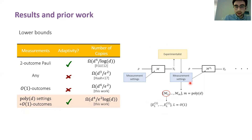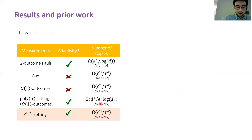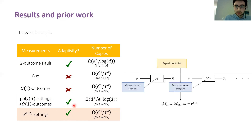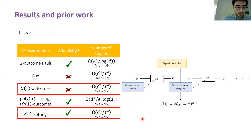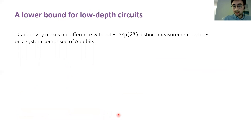Finally, this brings us to our main result: a tight lower bound on single copy quantum tomography that's robust to adaptivity, so long as you're limited to a number of measurement settings that doesn't grow exponentially in the dimension. Now why is this bound interesting? These are the two lower bounds I'll be focusing on mainly in this talk. Let me explain why that last bound is interesting in particular: it implies that adaptivity makes no difference without a number of distinct measurement settings that grows doubly exponential in the number of qubits comprising the system.